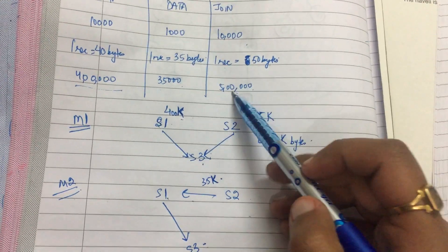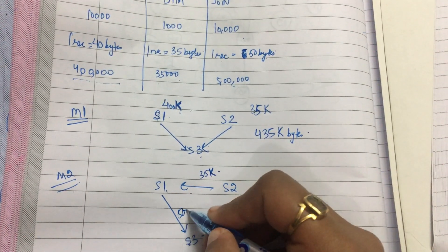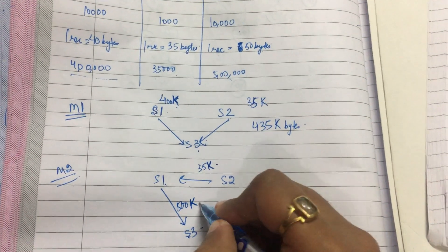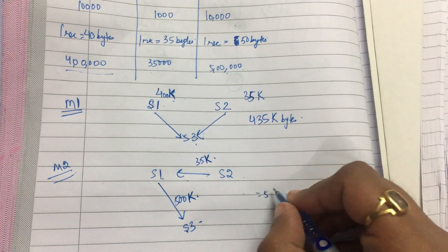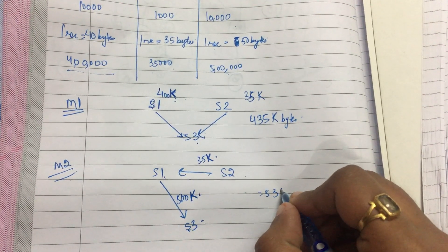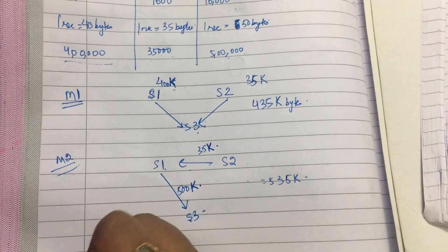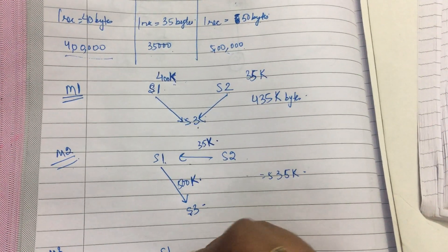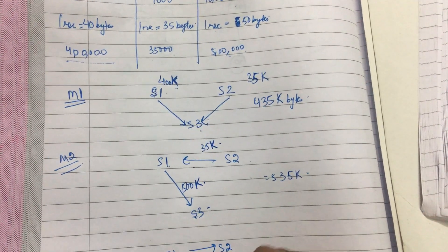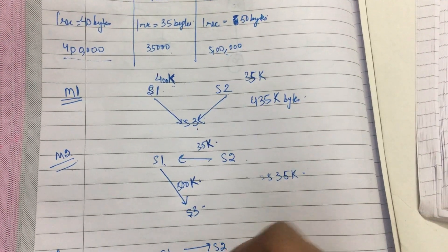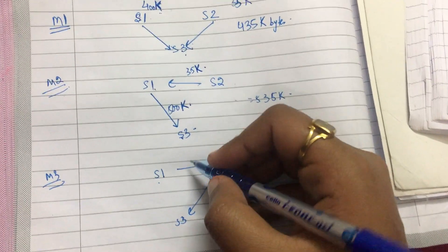500K data, so total sent will be 535K data. Now method 3 is that first I send from S1 to S2,